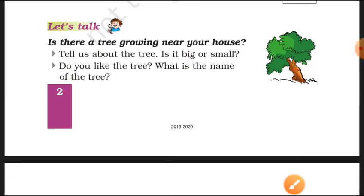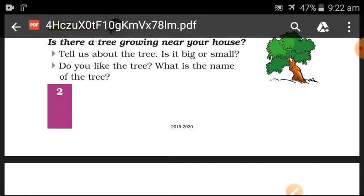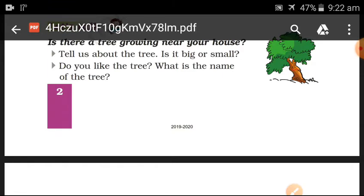Now, is there a tree growing near your house? If you have a tree in your house, tell us about it. You will write three or four sentences and its name. If you have a tree in your house, then green and brown. Green leaves are green and brown is a trunk.